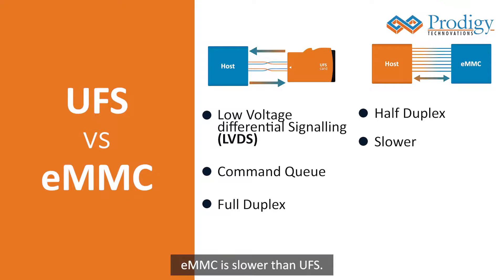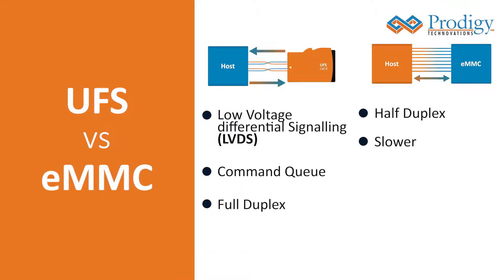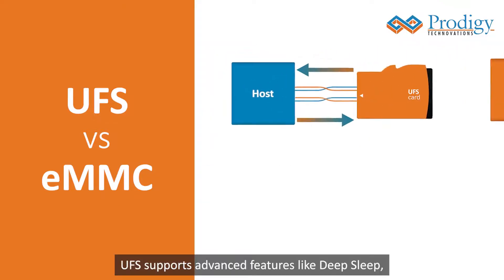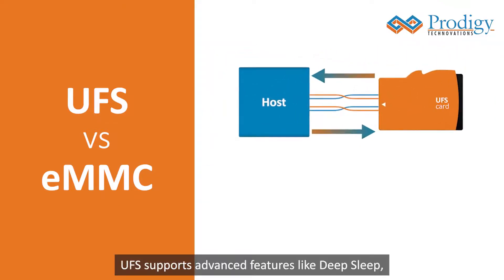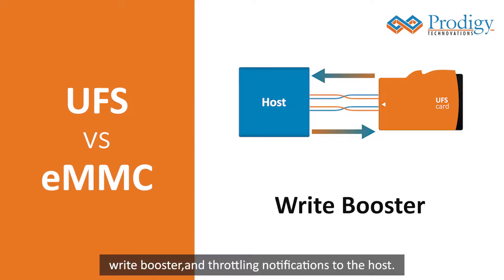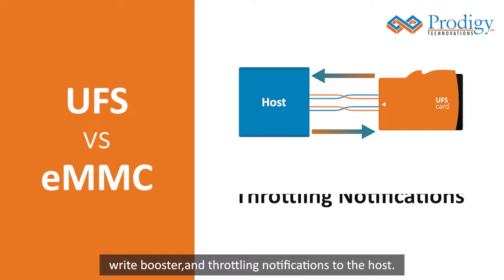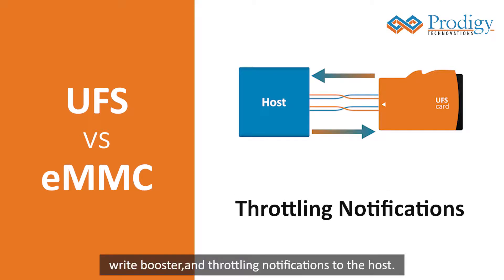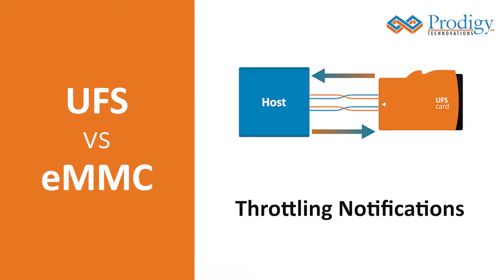EMMC is slower than UFS. UFS also supports advanced features like deep sleep, write booster, and throttling notifications to the host.